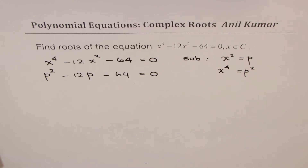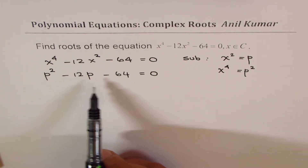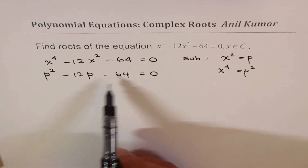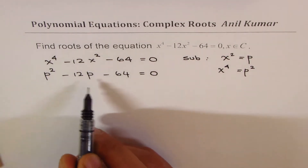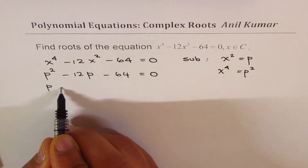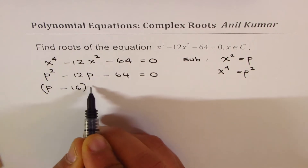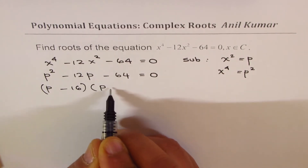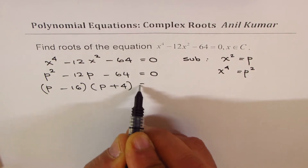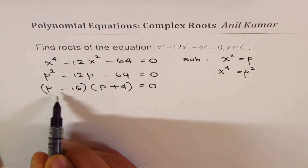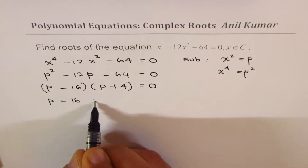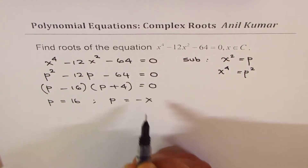Now we can factor this. We are looking for a product of two numbers to be minus 64 and the sum to be minus 12. 16 and 4 can work. Since this is negative, the bigger number is negative. So we get p minus 16 times p plus 4. That gives you two solutions: p equals to 16, and the other one is p equals to minus 4.